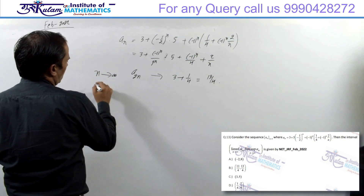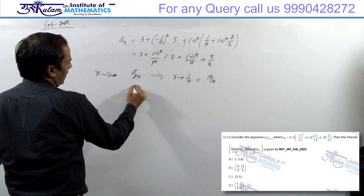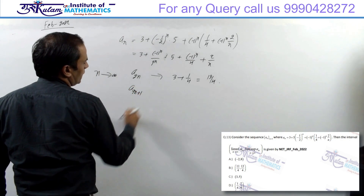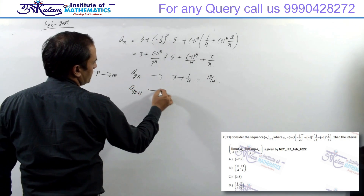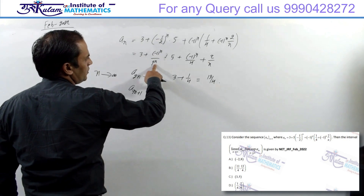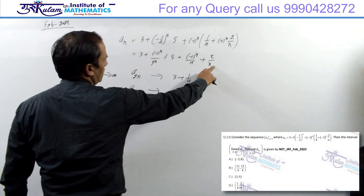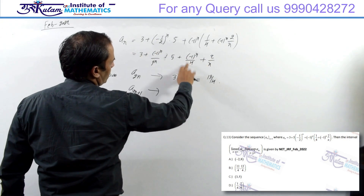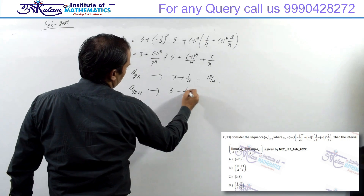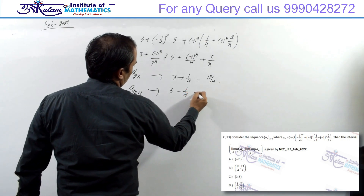और अगर a_{2n+1} की बात करेंगे — odd term का sequence — तो पहली term 0, दूसरी term 0, और तीसरी minus की तरफ आएगी। तो यह आएगा 3 minus 1/4, which is 11/4।